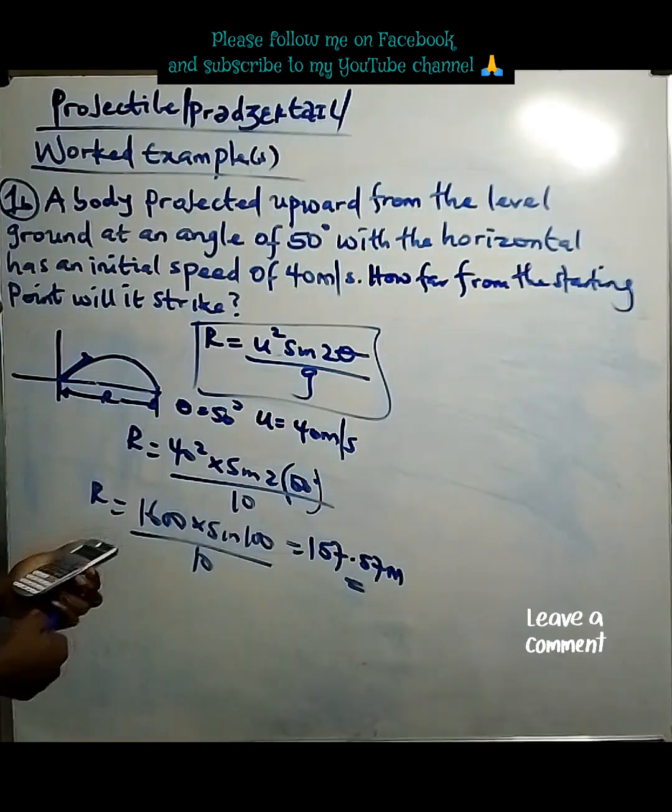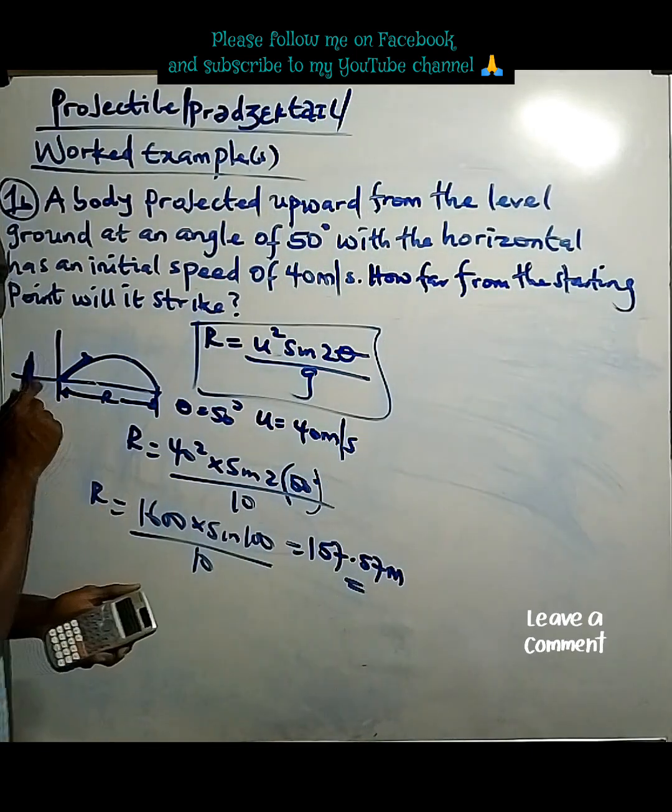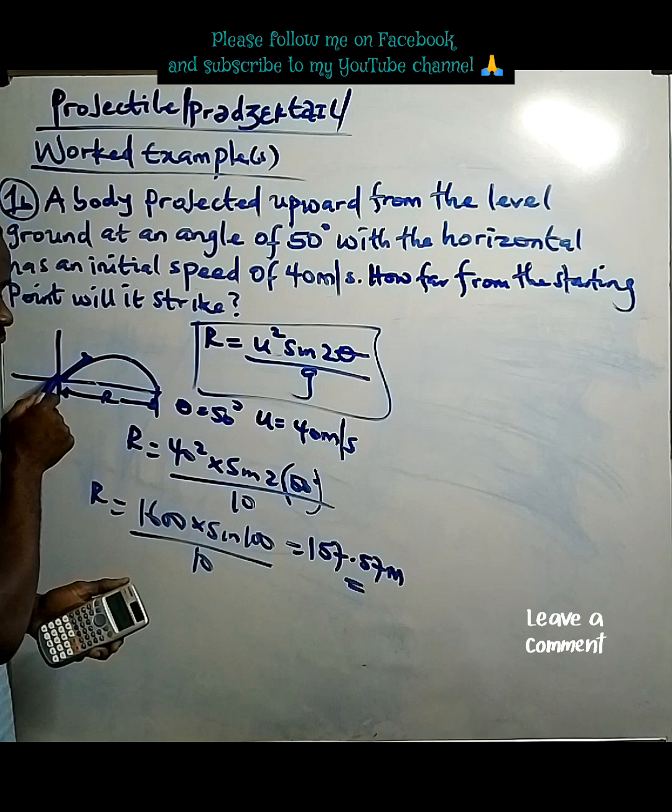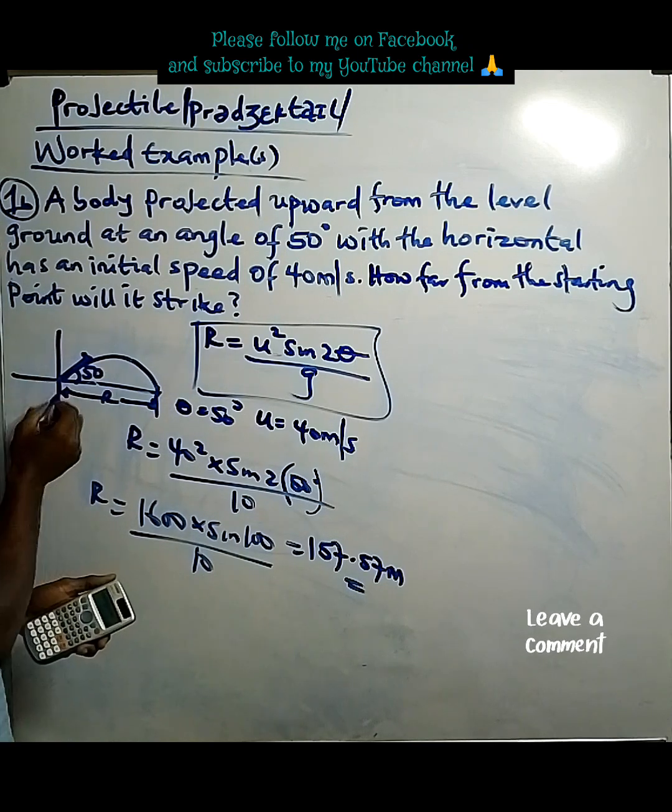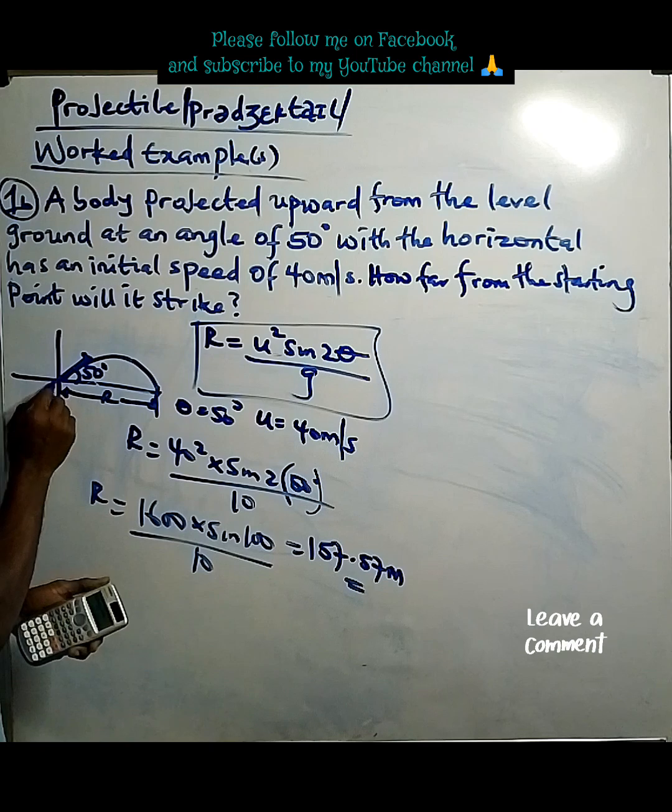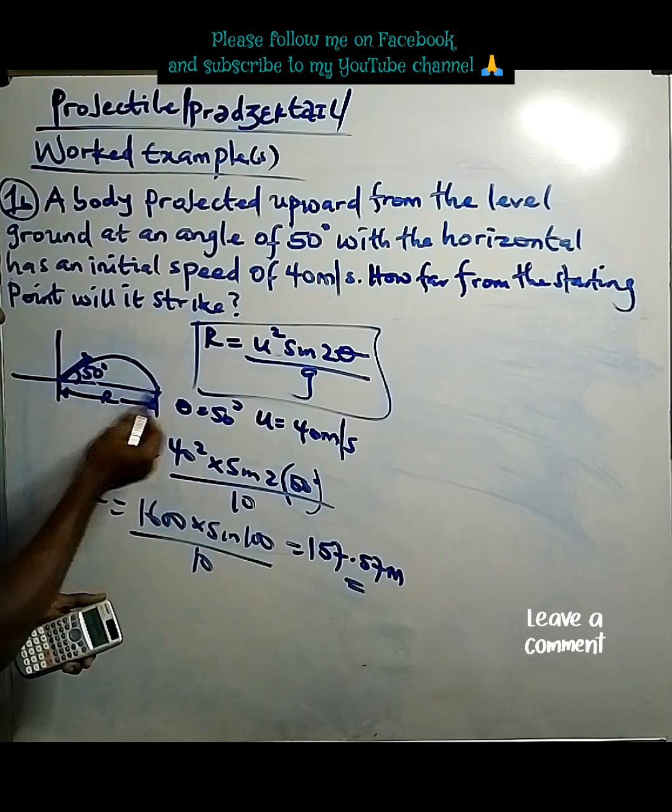So, it means this very object or this very body was projected from this place at an angle of 50 degrees. Then it covers a distance of 157.57 meters from here to here.